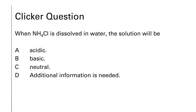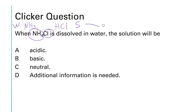This question asks us to determine what the pH will be when ammonium chloride is dissolved in water. The ammonium part came from ammonia, and the chloride part came from HCl. That's a weak base and a strong acid, so the strong acid determines the pH. This will be an acidic salt, so the correct answer is A.